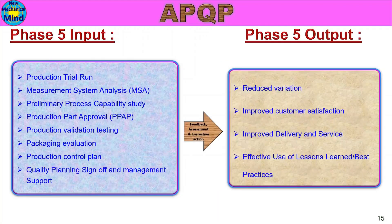Let's look at the outputs. The Phase 5 outputs are: Reduced Variation, Improved Customer Satisfaction, Improved Delivery and Service, and Effective Use of Lessons Learned and Best Practices.